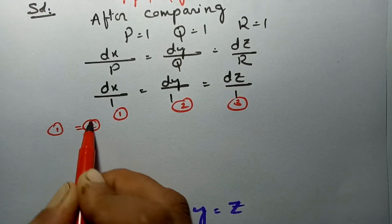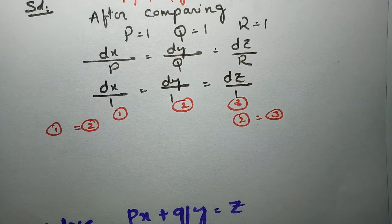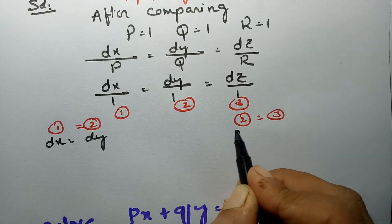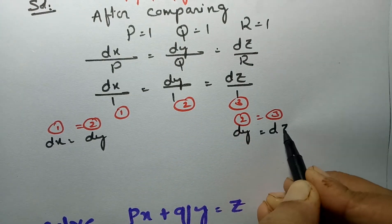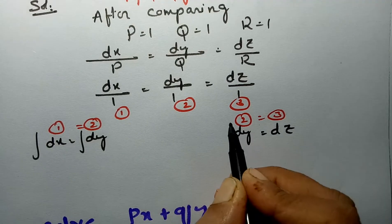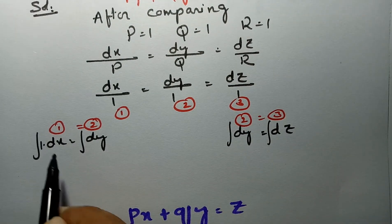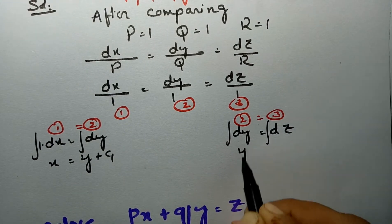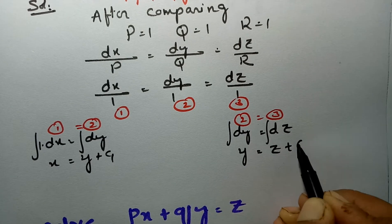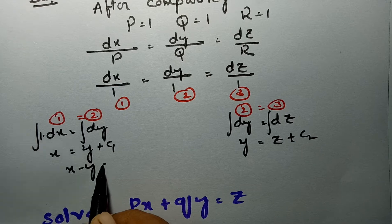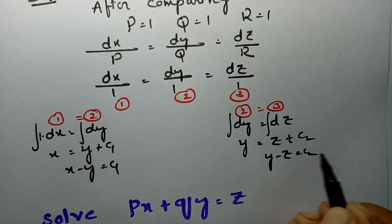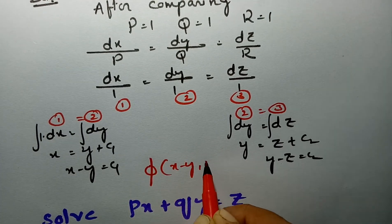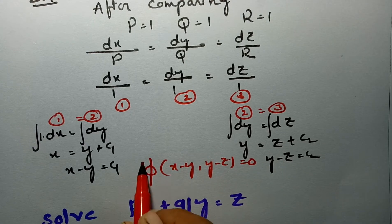Equating equations 1 and 2: dx = dy, and equating equations 2 and 3: dy = dz. Integrating both sides, we get x = y + c₁, so x − y = c₁, and y = z + c₂, so y − z = c₂.